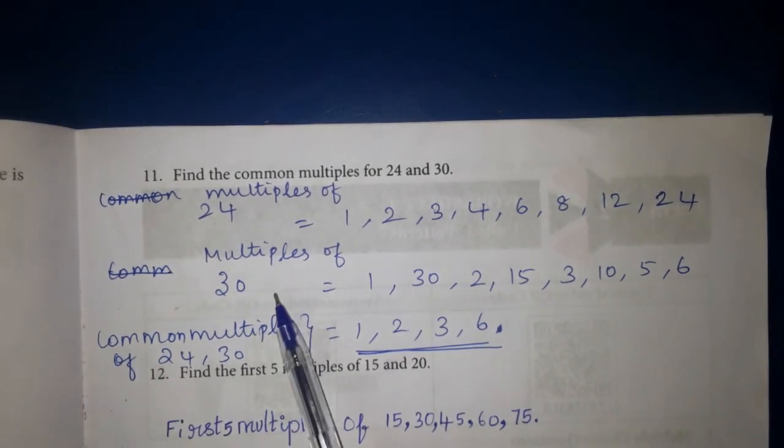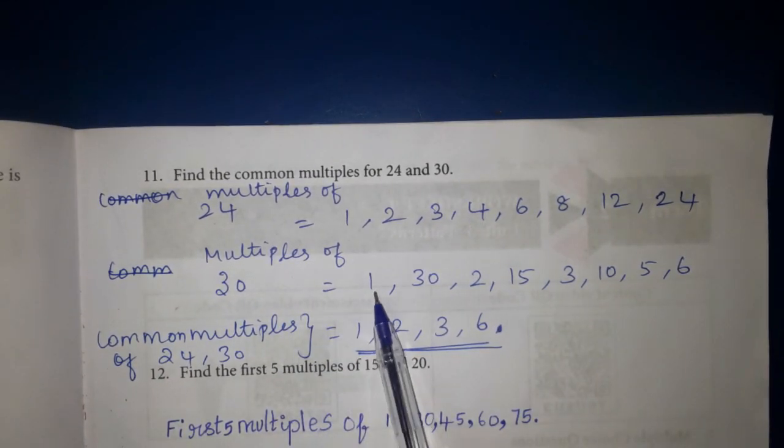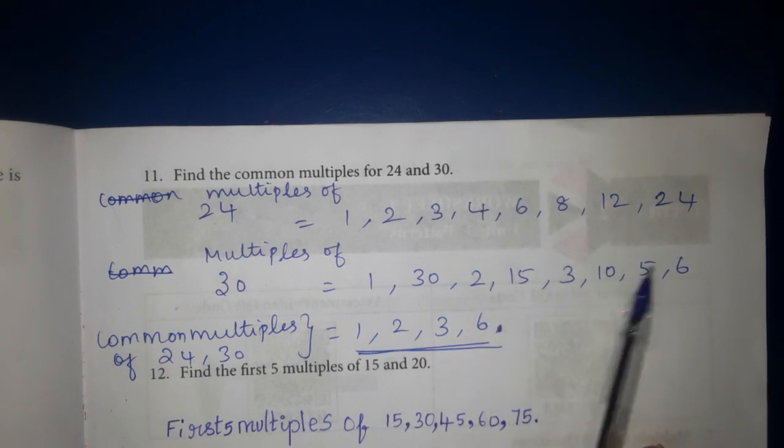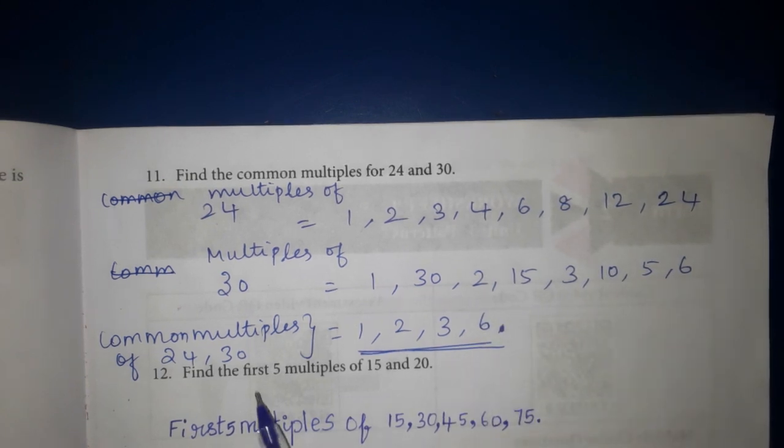Multiples of 30, 1, 30, 2, 15, 3, 10, 5, 6. So the common multiples of 24 and 30. Answer 1, 2, 3, 6.